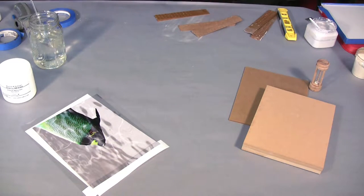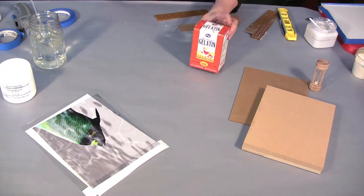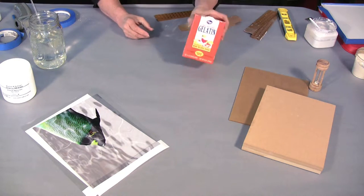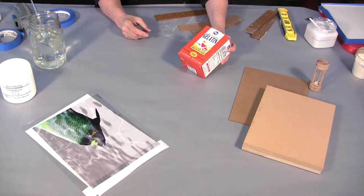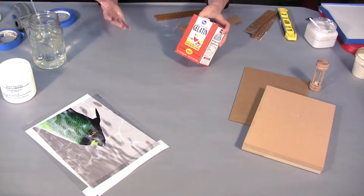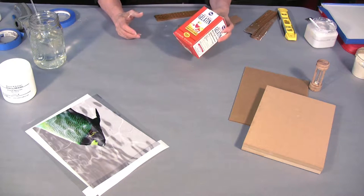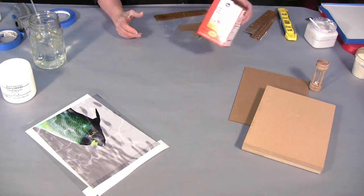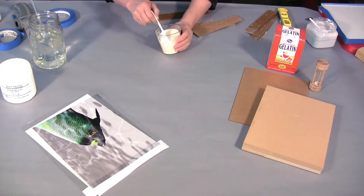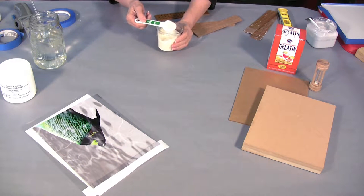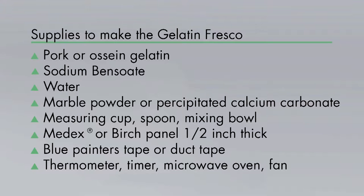So the first step is to determine what kind of gelatin you'd like to use. You can use these gelatins that are from the grocery store, however the bloom, which means how firmly it sets up, can vary from batch to batch. And that's why I prefer to use a pork gelatin that we sell. The bloom is always consistent and because it's so fine it swells in water quite quickly.